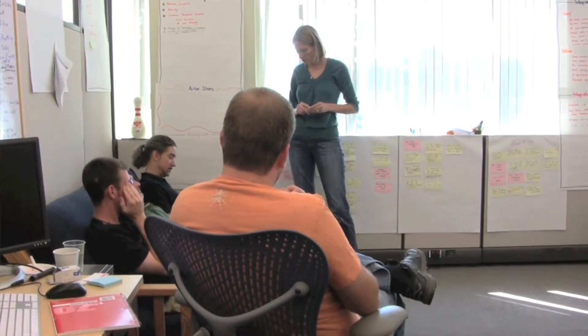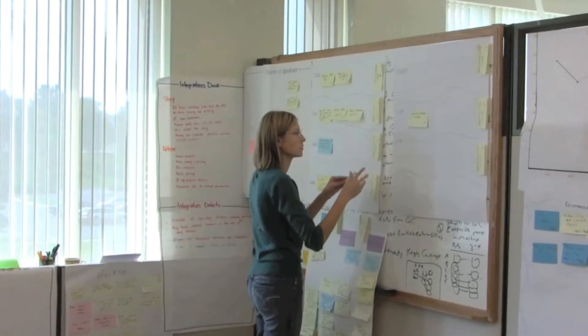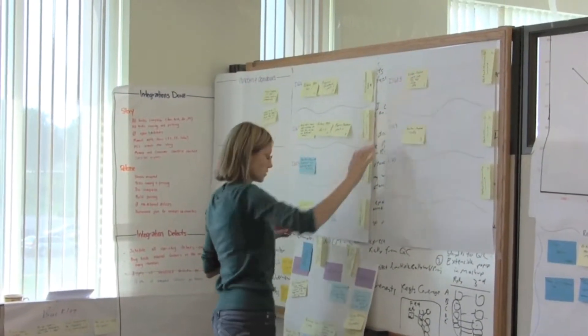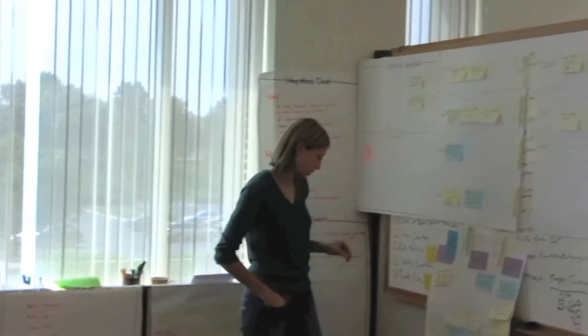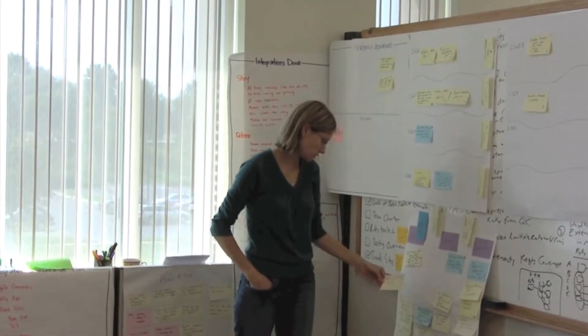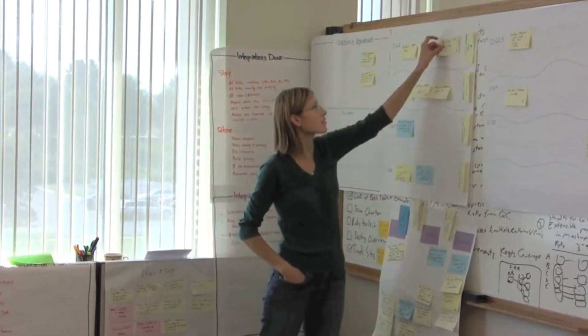The purpose of the backlog grooming session is for the entire team to talk about the backlog and look at the details of each of the stories, making sure the entire team is clear on what is going to happen for the upcoming release. This is a great opportunity to discuss each story's details, risks, and dependencies, and then provide the product owner with a high-level estimate. At the end, the product owner should have a clear list of stories and can move forward with prioritizing the backlog.